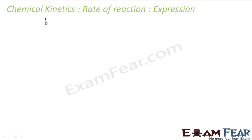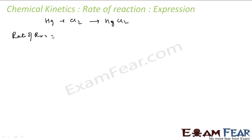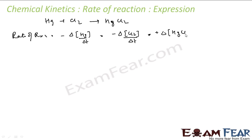To write the expression for the rate of reaction, let's take the reaction: Hg + Cl₂ → HgCl₂, where HgCl₂ is liquid and chlorine is a gas. The rate of reaction will be minus of change of concentration of Hg with respect to time, or minus of change of concentration of Cl₂ with respect to time, or plus of change of concentration of HgCl₂ with respect to time — positive because it's a product.